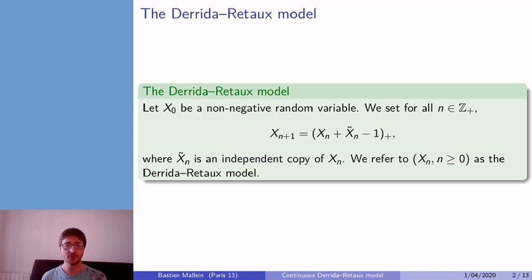The Derrida-Retaux model can be thought of as a dynamics on the set of probability distributions on the positive half-line. It can be constructed as a process in the following fashion. We start at time 0 with a non-negative random variable X₀ and to construct the random variable X₁, we take an independent copy of X₀, sum our two random variables, remove one and take the positive part.